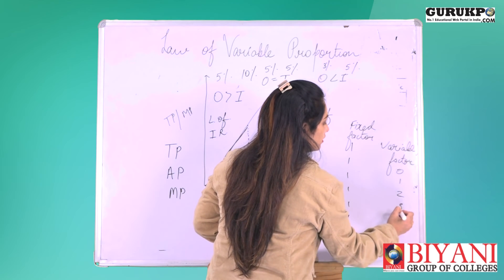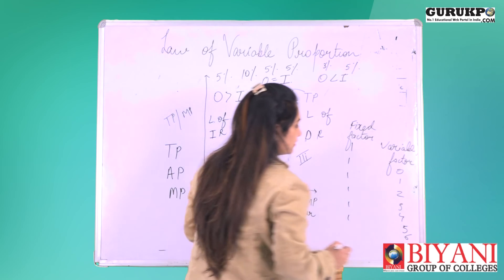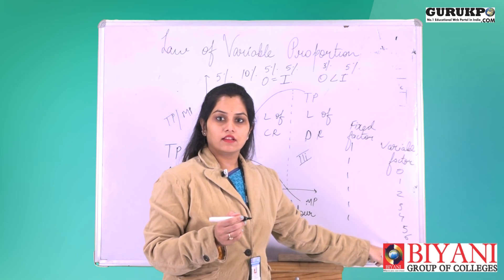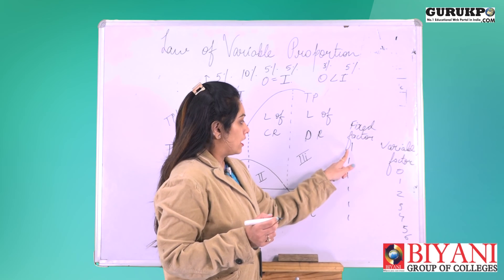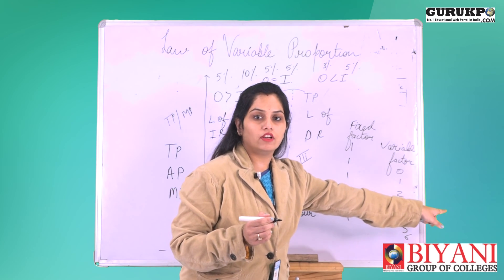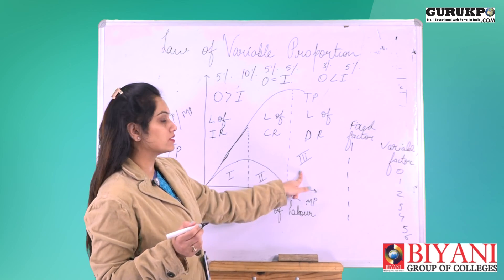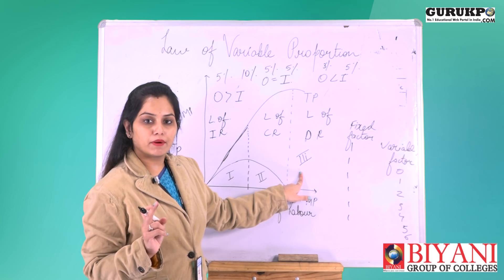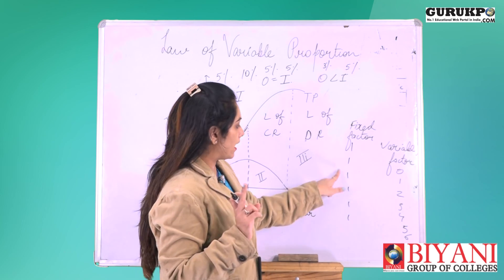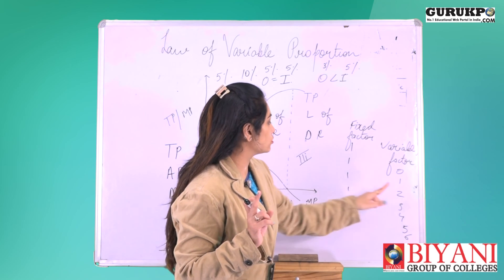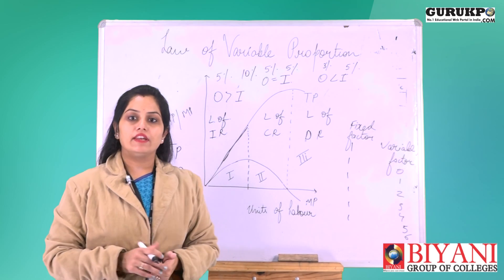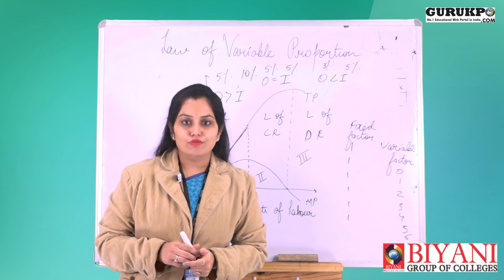As the fixed factor remains constant at one unit, the variable factor increases: 0, 1, 2, 3, 4, 5, 6. Keeping the fixed factor constant while changing the variable factor produces results across these three stages. The proportion changes as 1:0, 1:1, 1:2, 1:3, and so on — that is why this is called the law of variable proportion. Thank you.